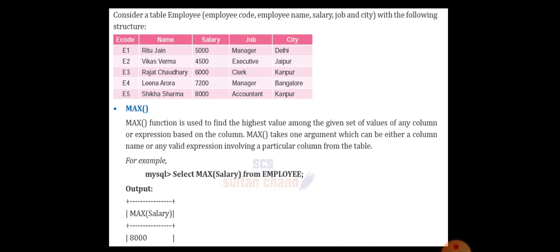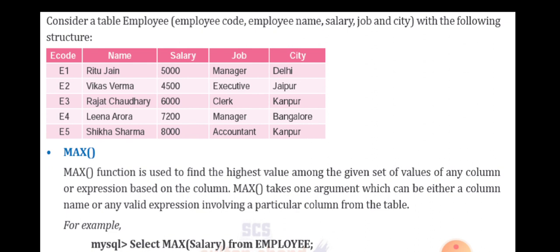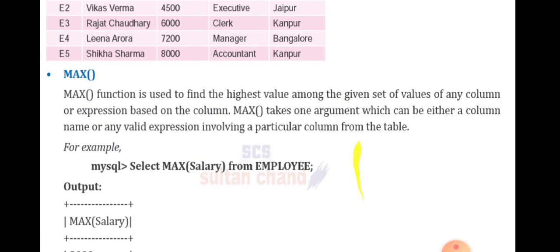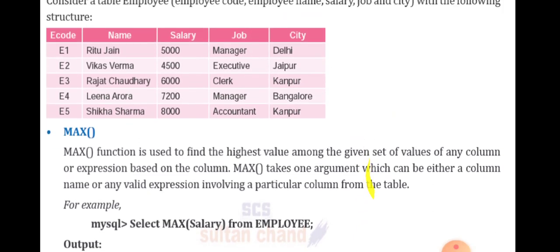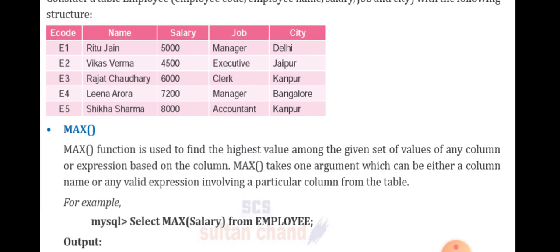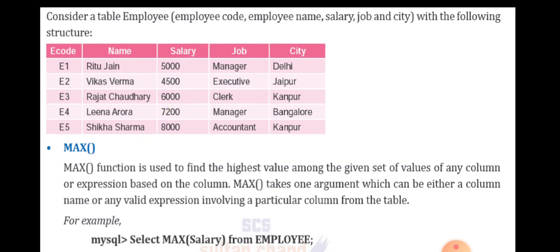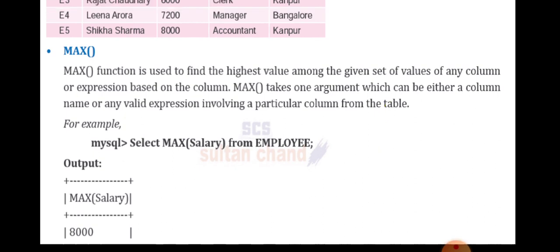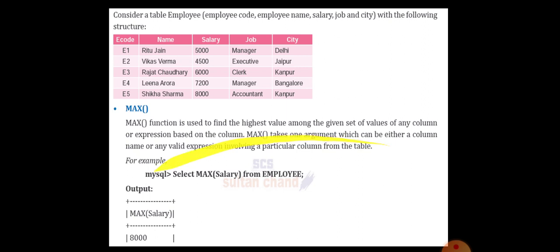Look at the example. Consider a table Employee with the following structure. MAX function is used to find the highest value among the given set of values of any column or expression based on the column. The MAX takes only one argument which can be either a column name or any valid expression involving a particular column from a table. Look at the example given: Select MAX(Salary) from the Employee table. Without seeing the output, we can easily say it is 8000. So you will get the result as MAX of Salary.